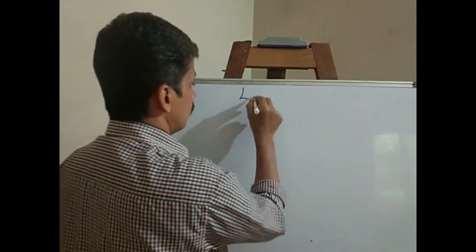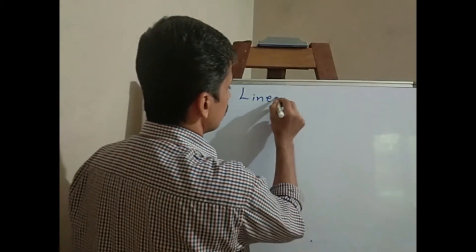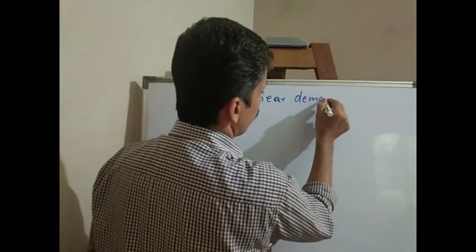Good morning students. We are discussing the second chapter of microeconomics — theory of consumer behavior. We discussed about the income effect and the substitution effect, and in this session we are going to discuss about the linear demand function.